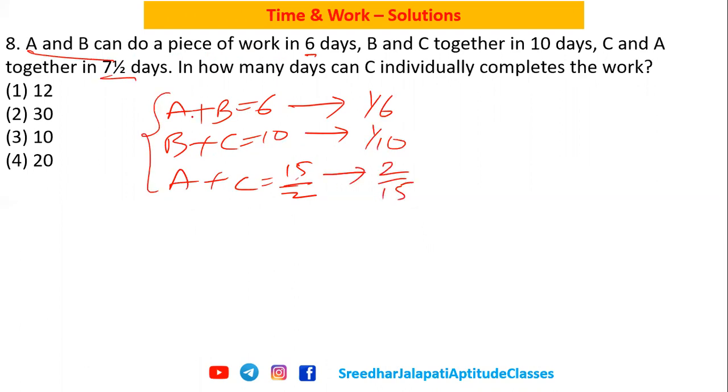So on the left hand side, if I add A plus B, B plus C, and A plus C, then A is involved twice, B is involved twice, C is involved twice. So that means 2(A+B+C) one day work equals on the right hand side 1/6 plus 1/10 plus 2/15.